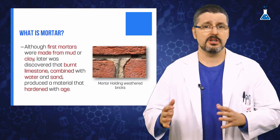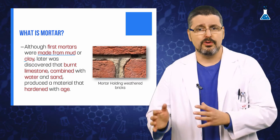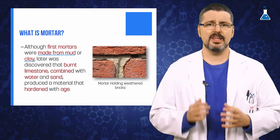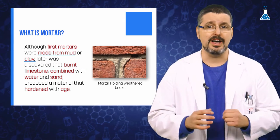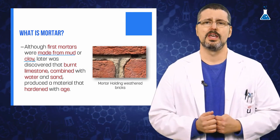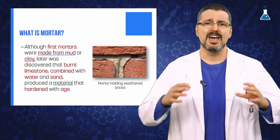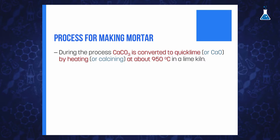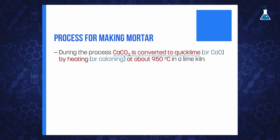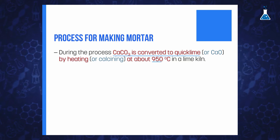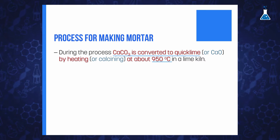But what is the chemical composition of mortar? The first mortar was made from mud or clay due to the low cost of these materials, but later it was discovered that when limestone is burned and combined with sand and water it produces a material that gradually hardens with age. Chemically, limestone — calcium carbonate — is converted to quicklime, or calcium oxide, by heating at approximately 950 degrees Celsius in a lime kiln.